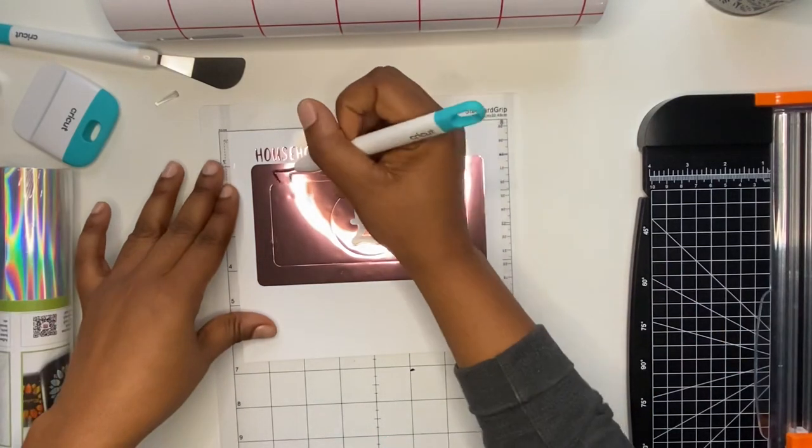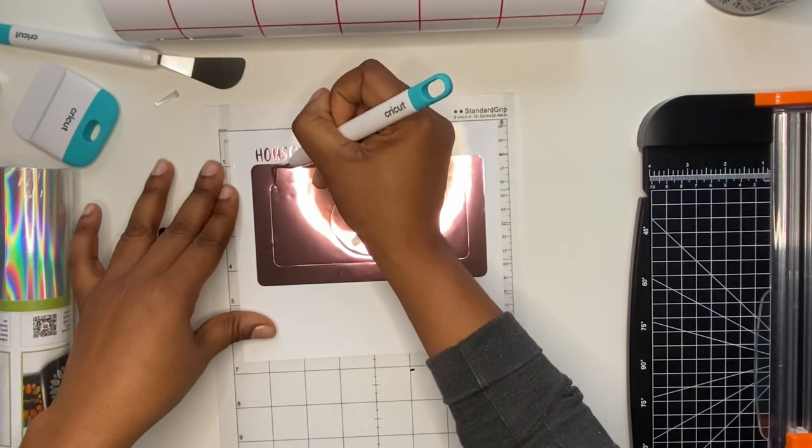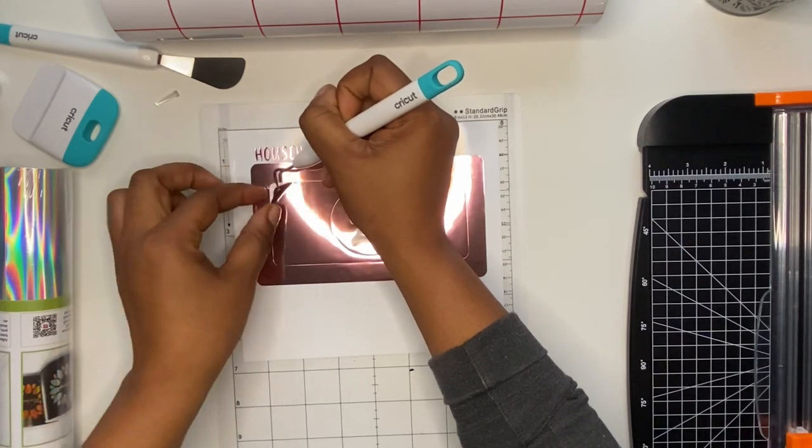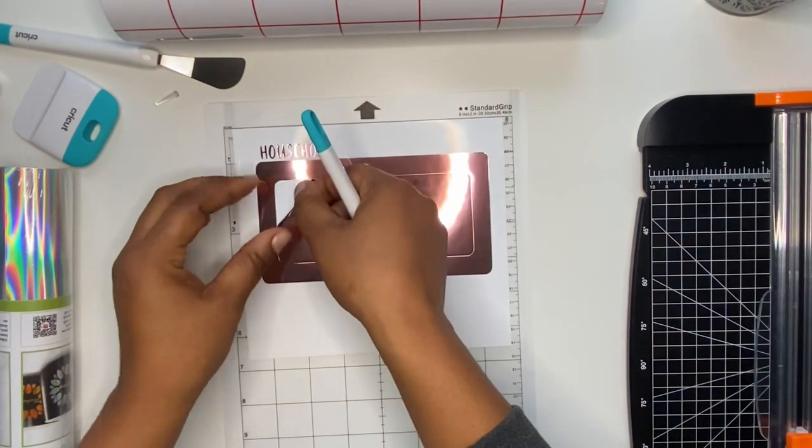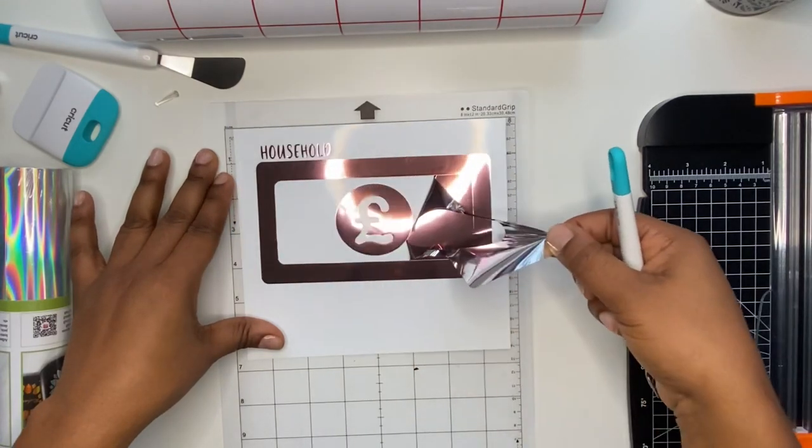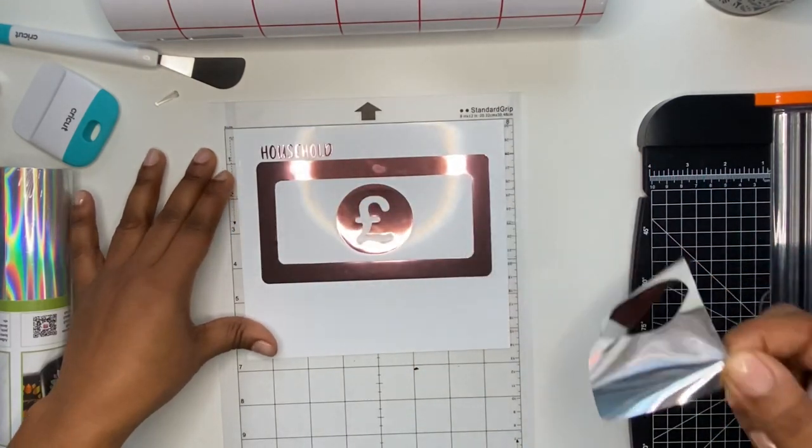Yeah, and then because I want to actually remove the pound sign but just have the outline, I'm going to take that out as well. We just need to take the middle bit out now. I mean, when it goes right, guys, it is quite satisfying to be honest.